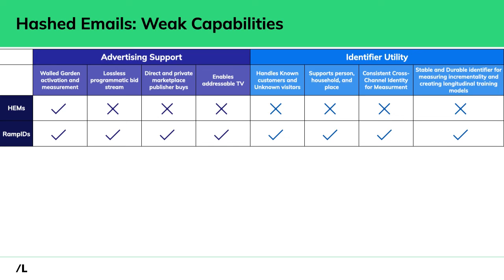You have no control over when a hashed email needs to change — when a user changes or updates their email address, that's a new HEM. A RampID does not change when PII changes. Whether it's demographic changes or device changes, the RampID is stable. It lets you get long-term, durable measurement, which is so important as people are doing modeling and building new data sets for ML algorithms.